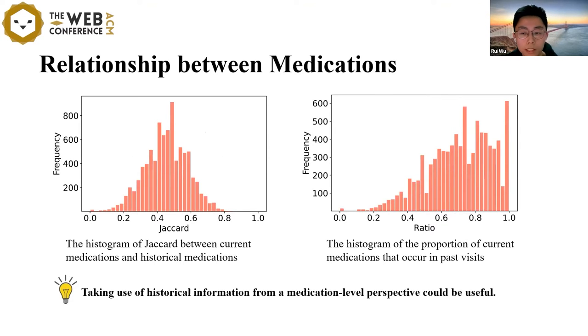One problem in existing models is that they do not explicitly model the relationship between medication recommendations for the same patient. However, in clinical practice, the recommendations for the same patient are usually closely related. For example, for patients with chronic diseases, they may keep using the same medicine all their lives. As shown in this figure, we also conduct a statistical analysis on the MIMIC-3 dataset.